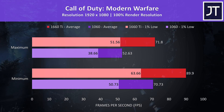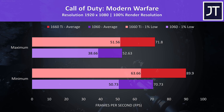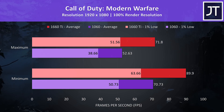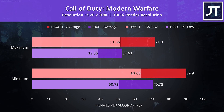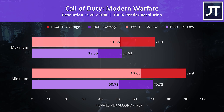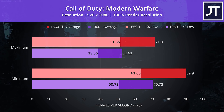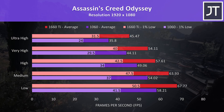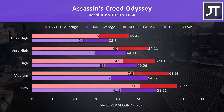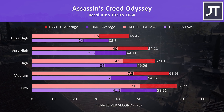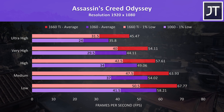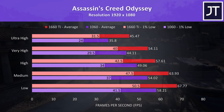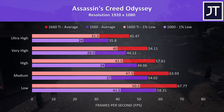Call of Duty Modern Warfare was tested at maximum and minimum settings. The 1% low from the 1660 Ti wasn't quite beating the average from the 1060 at max settings, but it was close. Comparing average frame rate, the 1660 Ti was 36% faster. Assassin's Creed Odyssey was tested using the game's benchmark and saw one of the smallest differences out of all 15 games. At the highest setting level the 1660 Ti was 27% faster in average FPS, with not much difference at lower settings.